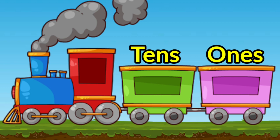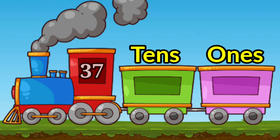Now let's learn how to break two digit numbers in expanded form. Look at the train — we have one five, fifteen. Five will go in ones place and one will go in tens place. Now children look, we have three seven, thirty seven. Seven will go in ones place and three will go in tens place.